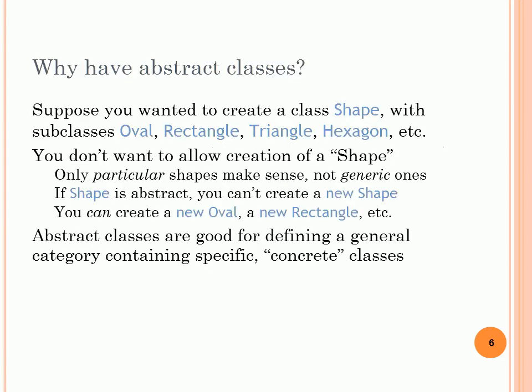Note that you can create an abstract class without any abstract methods — this will prevent instantiation from this class. Why have abstract classes? Suppose we want to create an abstract class 'Shape' with subclasses Oval, Rectangle, Triangle, and so on. However, we don't want to allow the creation of a generic Shape object — we only want to create specific shapes like a new Oval or a new Rectangle. Abstract classes are good for defining a general category of common characteristics between classes without defining the details.